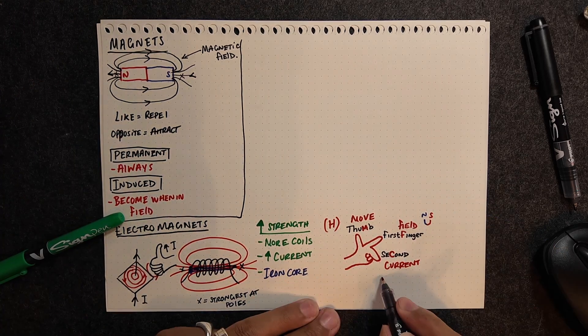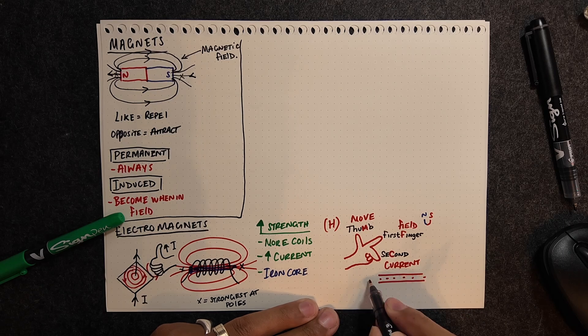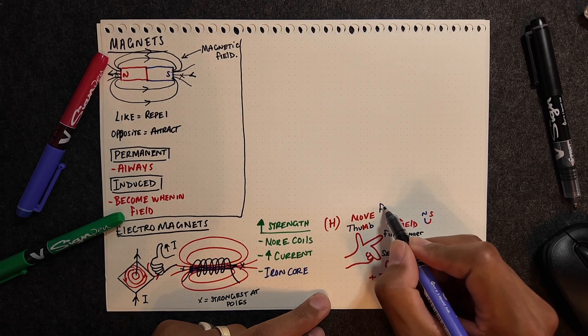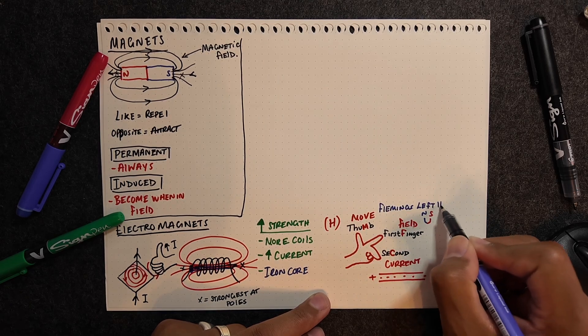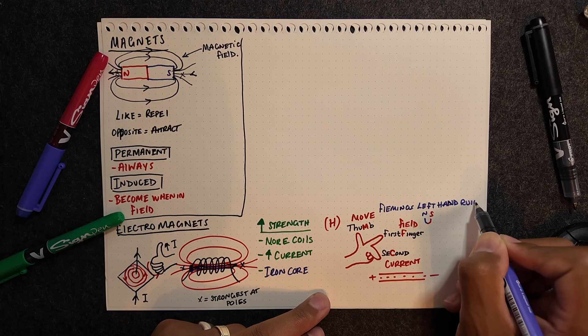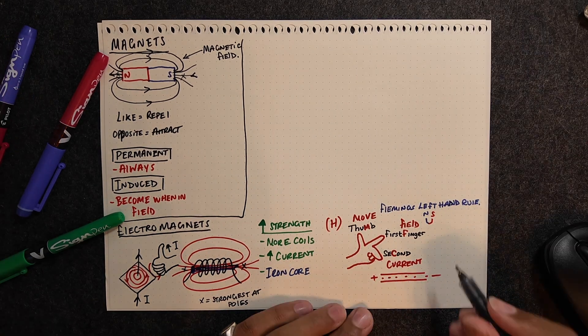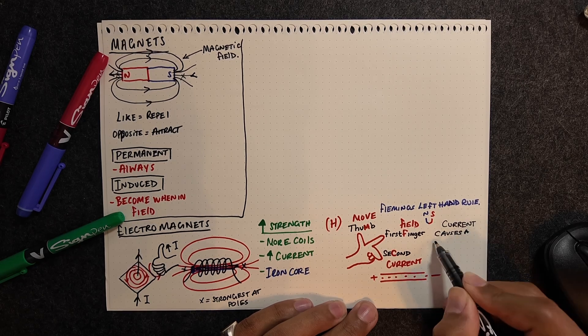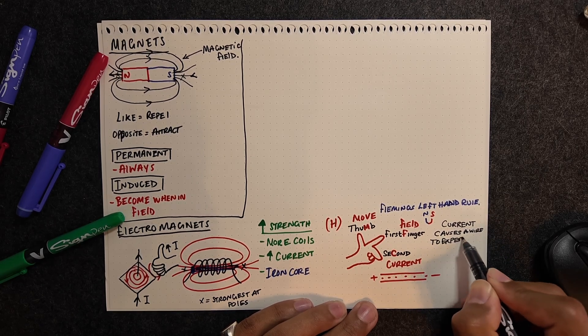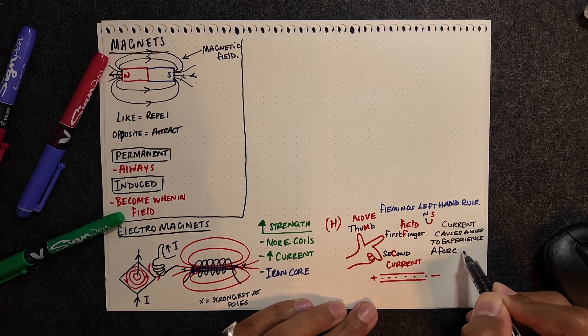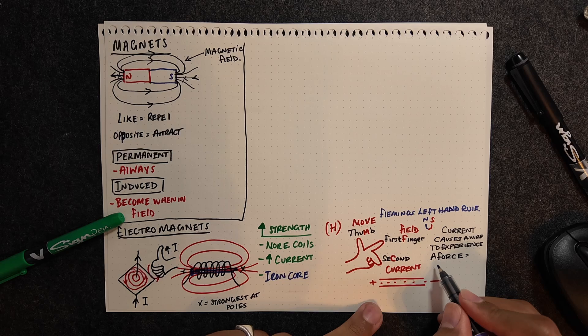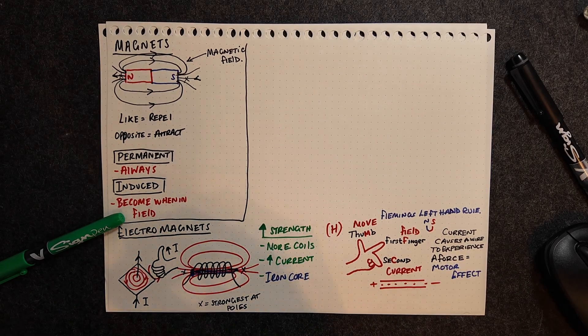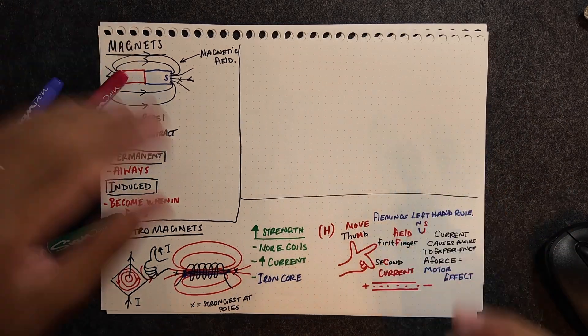So the field is just the magnetic field, which will go from north to south, and then the current is flowing from positive to negative through the wire. Using that left-hand rule, we can look at the effect of the current passing through the wire when it's in a magnetic field. Essentially the current causes a wire to experience a force within that magnetic field, and this is what we call the motor effect. This principle is basically for all electric motors.